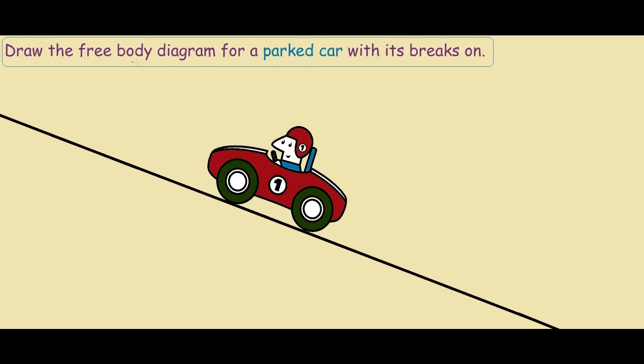In this question, we're asked to draw the free body diagram of a car, and we're told that it's parked. That means that the car is stationary, and we can see that it's stationary on a slope.